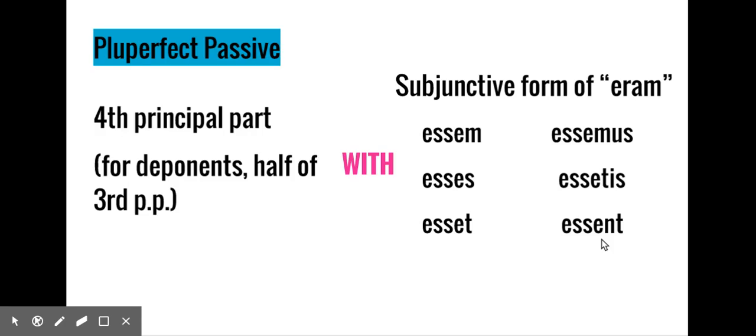So these six verbs serve as the auxiliary or helper verb with the fourth principal part. Just a reminder, since deponent verbs do not have a fourth principal part, we take the first half of the third principal part and use that for our pluperfect passive.